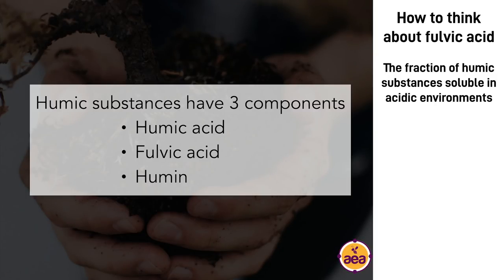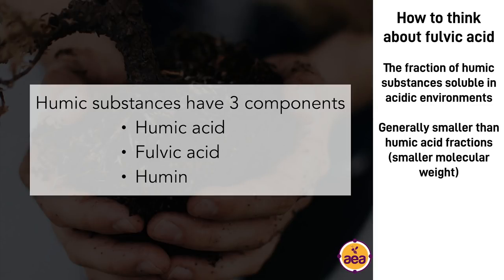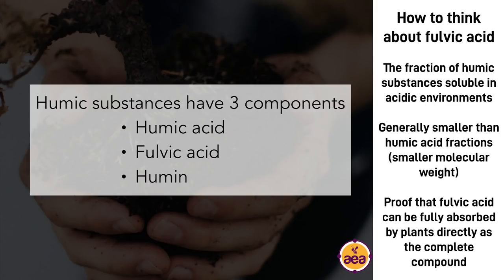There are substantial differences between humic acid and fulvic acid fractions. The fulvic acid fractions are generally much smaller — they have a smaller molecular weight — and there is proof in fact that plants can actually absorb fulvic acids directly as the complete molecule, either from the soil profile or through the leaves. For this reason, it's very frequently added to foliar applications and commonly used as a chelation agent to speed the absorption of nutrients from foliar applications or when applied to the soil profile.